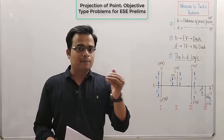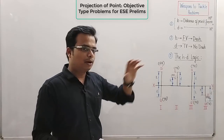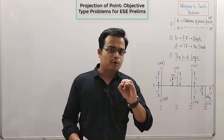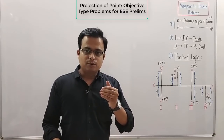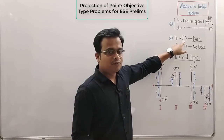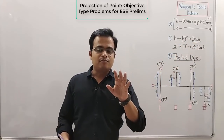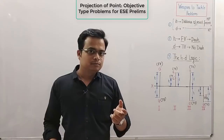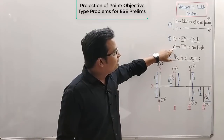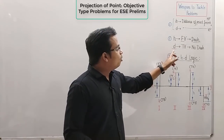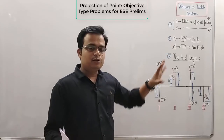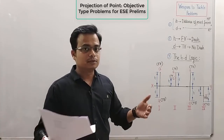Now these are the weapons I'm going to use to solve all the upcoming problems. Weapon one: H is the distance of a point above or below the HP, and D is the distance of the point in front of or behind the VP. With H, you associate a front view, and the front view is always denoted with a dash — for example, point A's front view will be A-dash, with dimension H. If you have dimension D, it means in front of or behind the VP, and it's always associated with the top view, which has no dash.